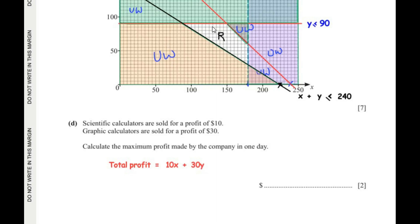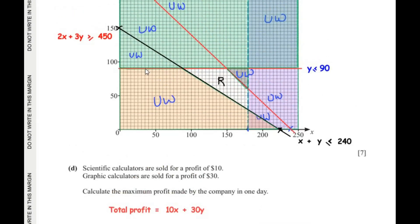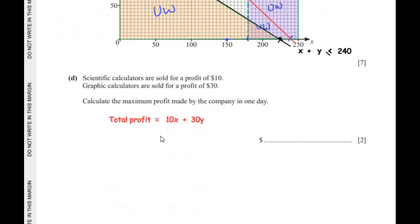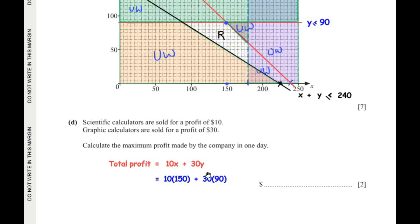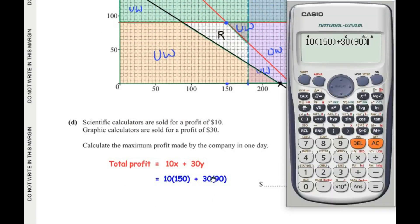At y = 90, the maximum value of x within region R is 150. Substituting into the profit formula: 10 × 150 + 30 × 90 = 1500 + 2700 = 4200. So the maximum profit the company can make in one day is $4200.